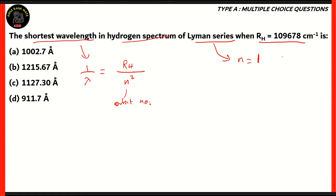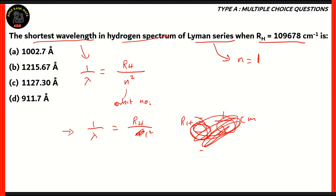In the Lyman series, n final is always equal to 1. So therefore, 1 by lambda in this case will be the Rydberg constant divided by 1 squared, which is 1. So you have Rydberg constant equals 1 by lambda per centimeter. In order to find lambda, we take lambda to the other side and get 1 by Rydberg constant in centimeters. The shortest wavelength is something we are asked a lot, so it's a good idea to memorize it.